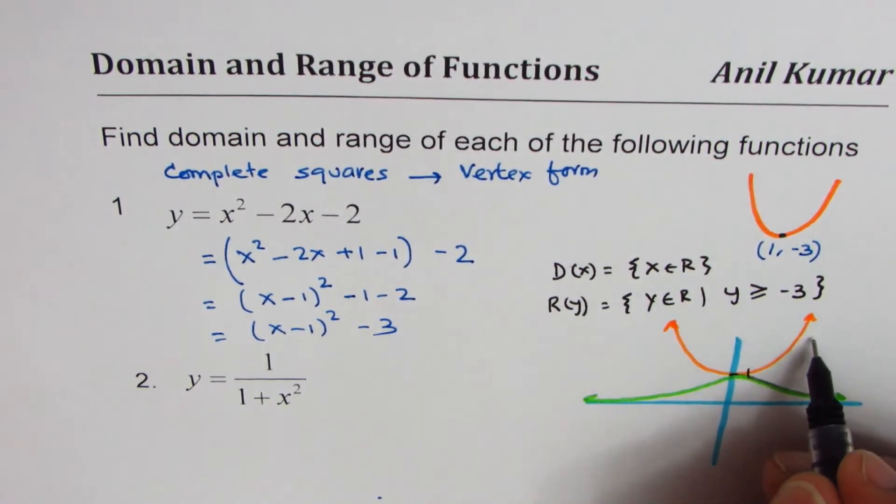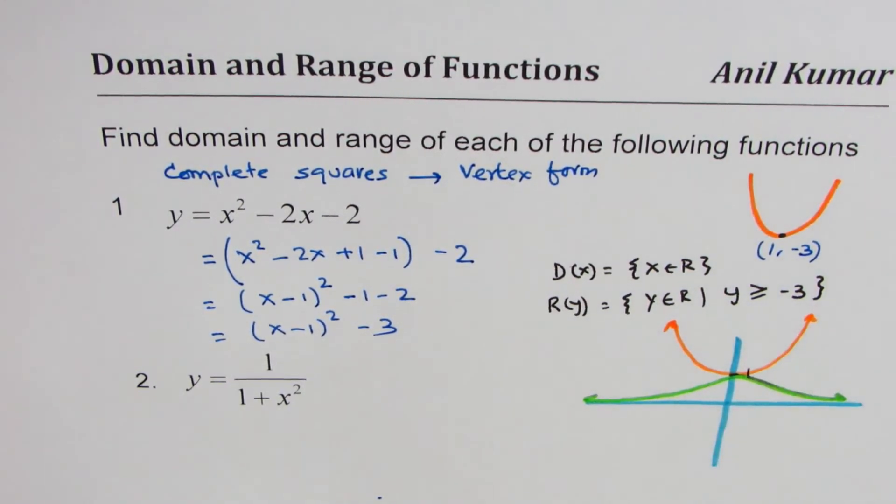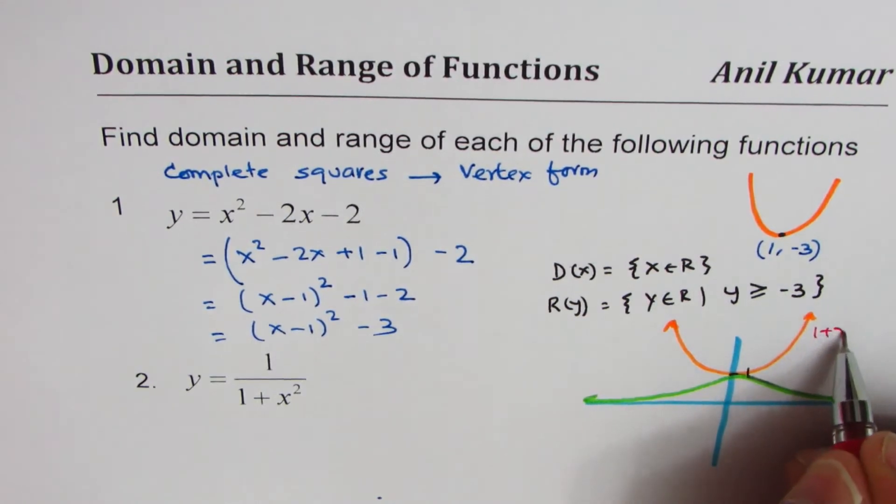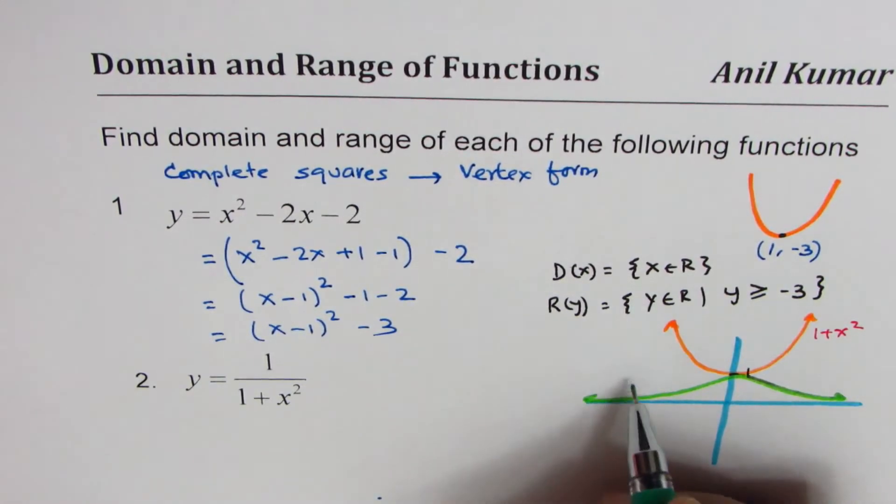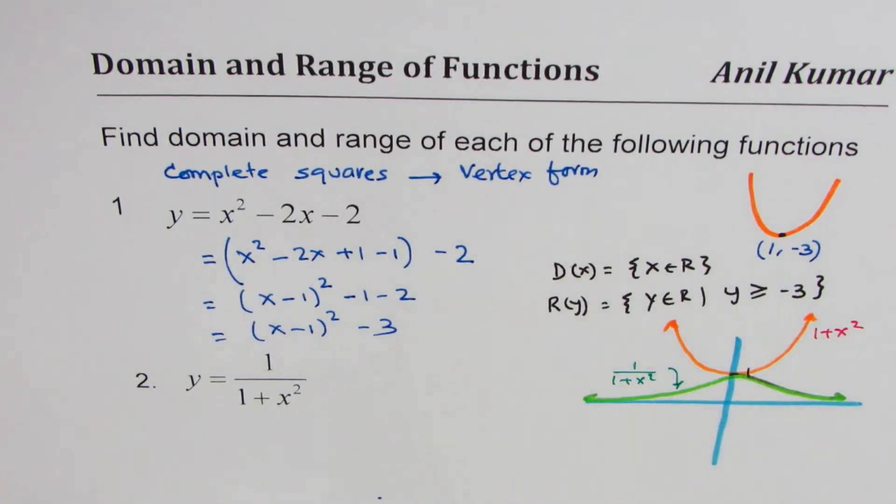Perfect. Now looking from the graph, this is graph of 1 plus x squared. And this one is graph of 1 over 1 plus x squared. Now from the graph, can you give domain and range of this function?